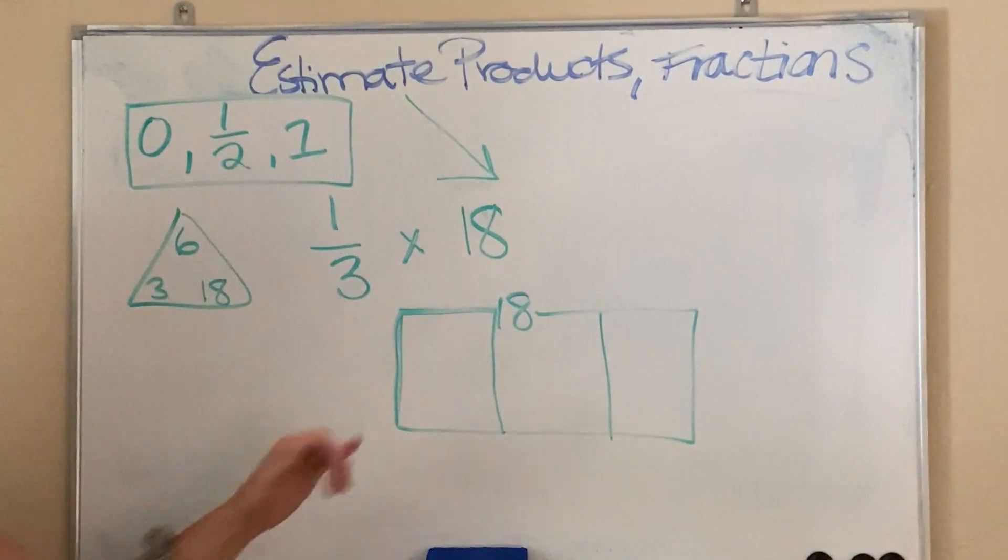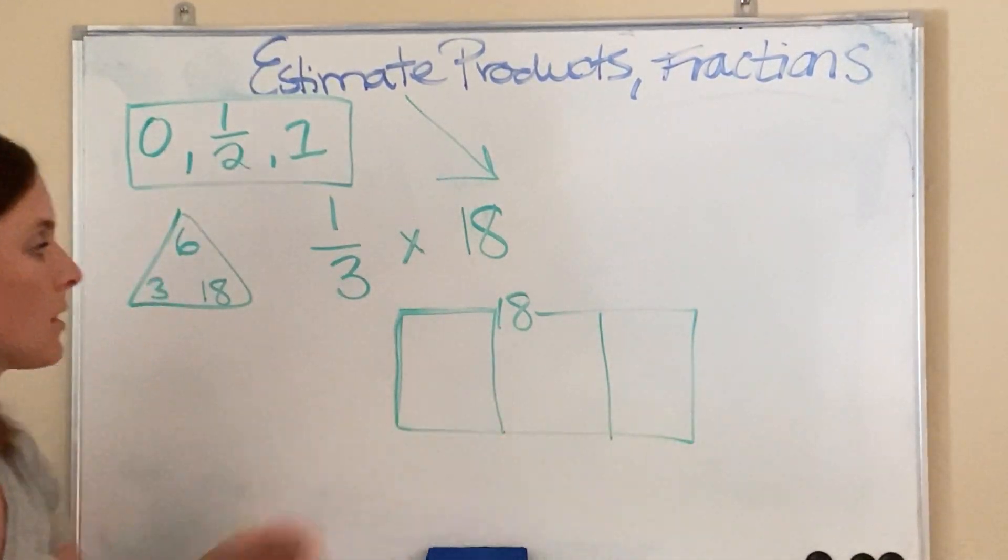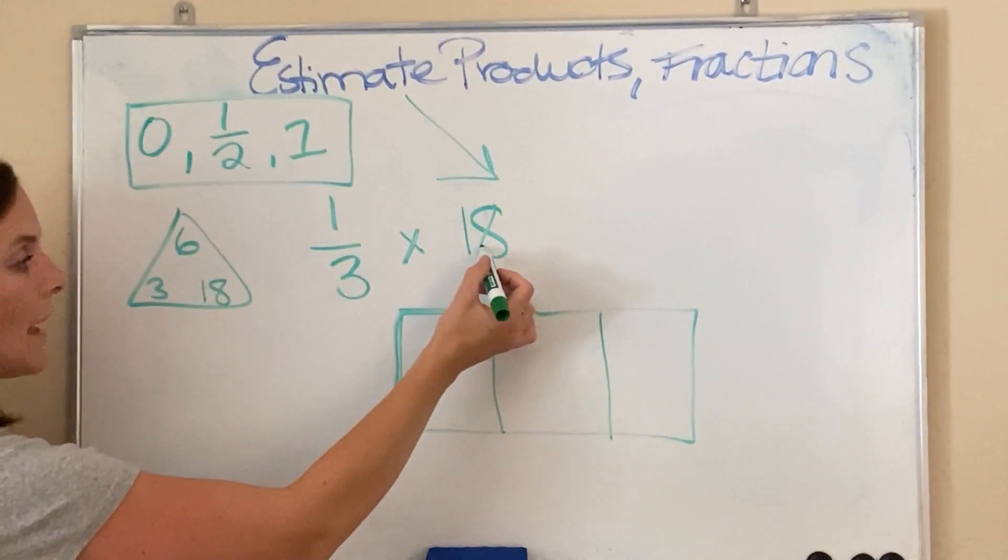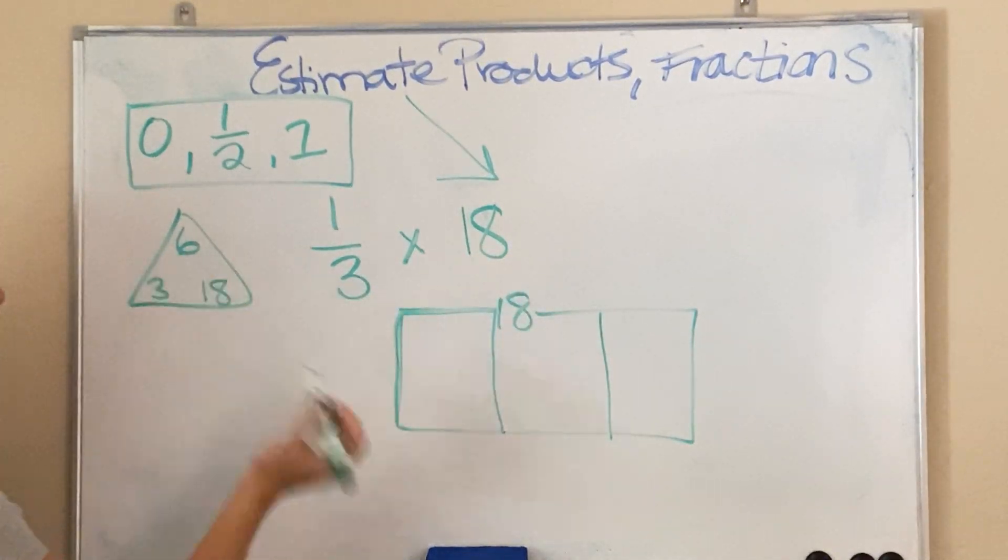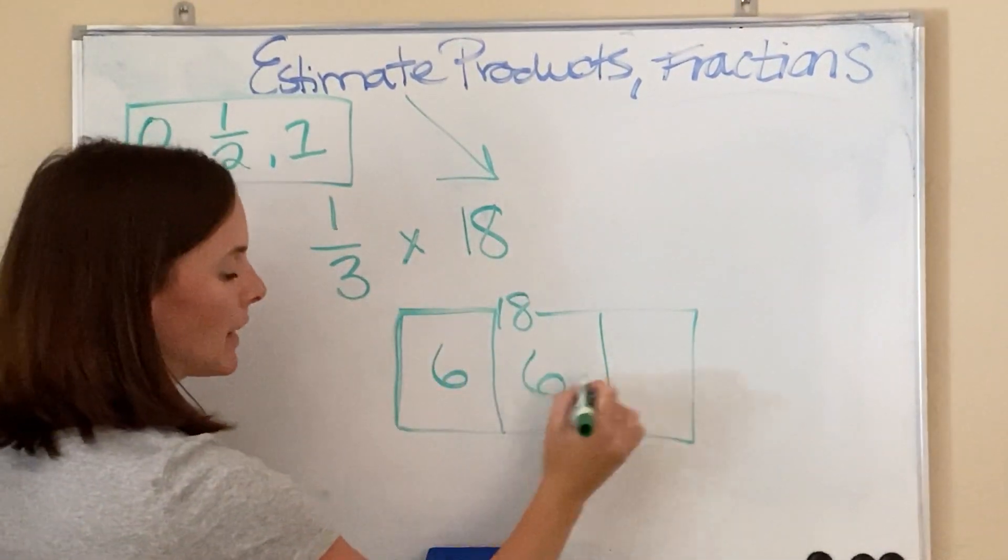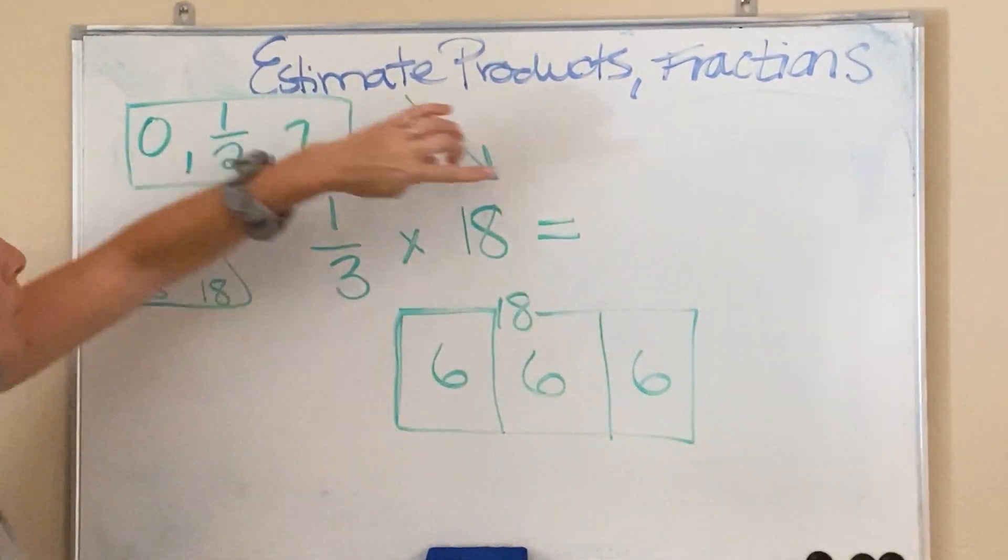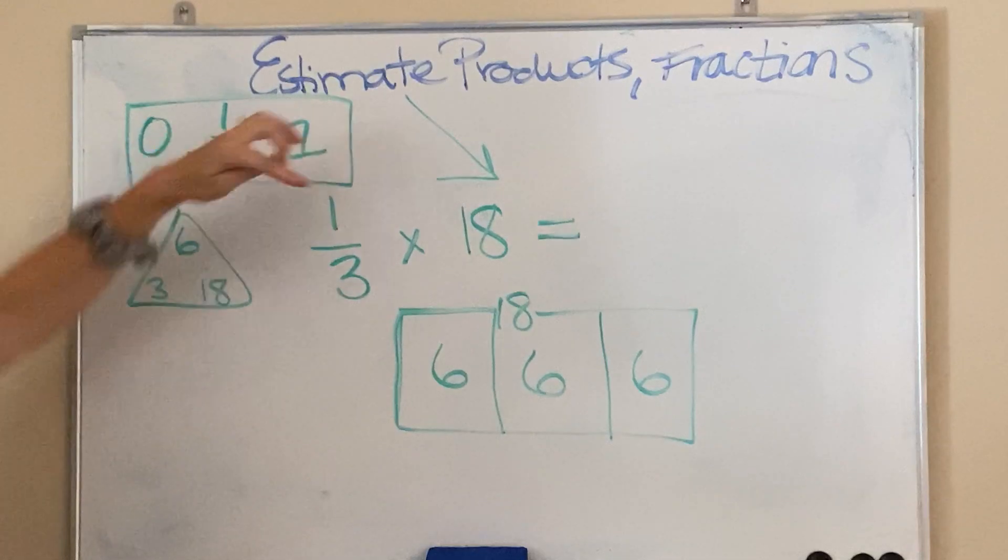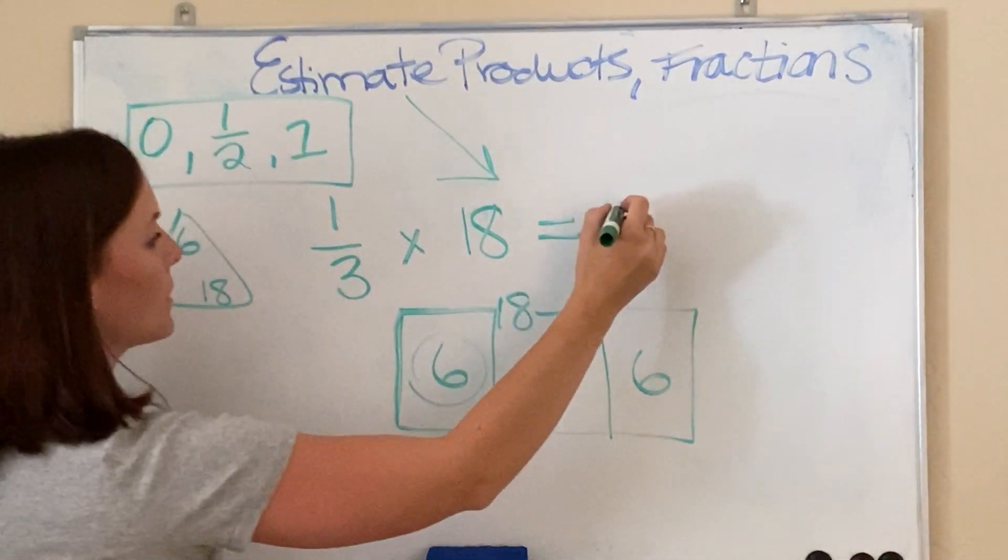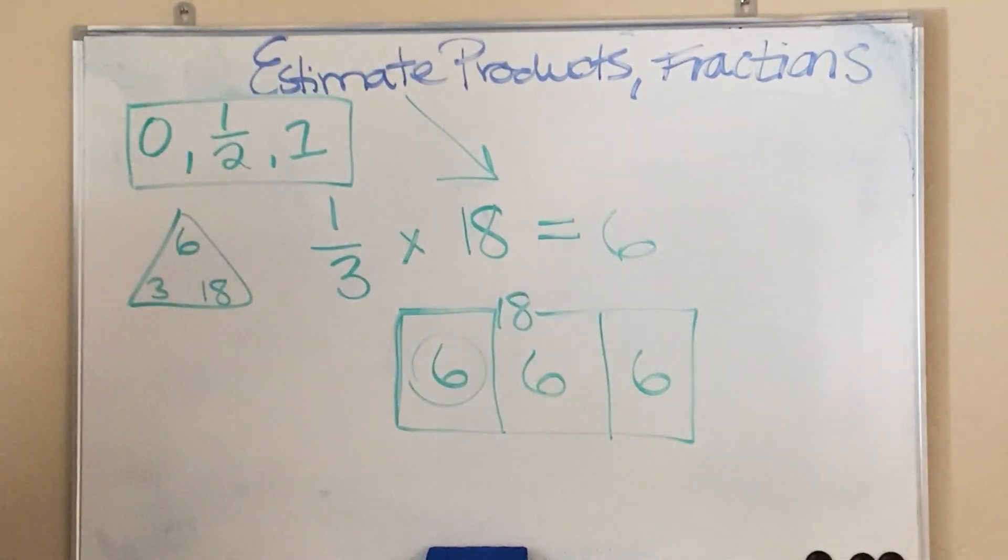Now, I need to figure out how much goes in each piece. By doing that, you take 18 and divide it by 3, which would give you 6. So, 6 goes in each box. And then, the numerator tells you the answer. I want to know the value of 1 of them. The value of 1 was 6. And there you guys have it.